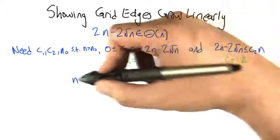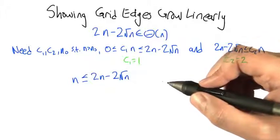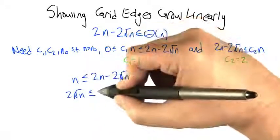For what values of n is that going to be true? It's not true of all of them, but it's true of some of them. We can add 2 root n to both sides and subtract n from both sides.